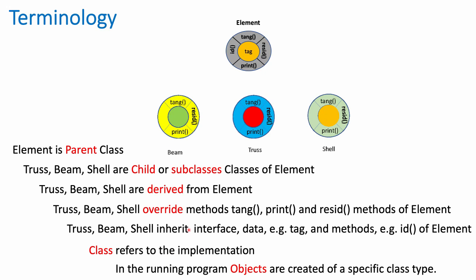Now, quickly, some terminology I'll be using throughout. The element is considered the parent class. The truss, beam, and shells are called child classes or subclasses of the element class. Truss, beam, and shell are also said to be derived from element. Truss, beam, and shell override the methods tangent, print, and residual of the element. They inherit the tag and id methods. When I refer to a class, I'm referring to the actual implementation. When the program is actually running, it's objects that are created of a specific class type.